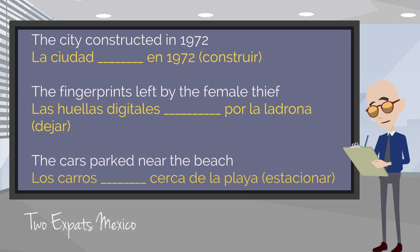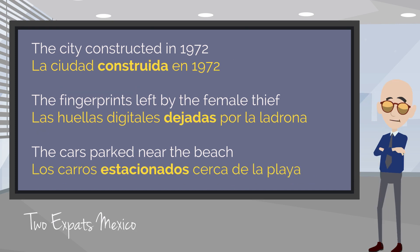Here are three more. The city constructed in 1972 — la ciudad construida en 1972. The fingerprints left by the female thief — las huellas digitales dejadas por la ladrona. And the cars parked near the beach — los carros estacionados cerca de la playa. All of our past participles are now adjectives and agree in number and gender with the noun they describe.